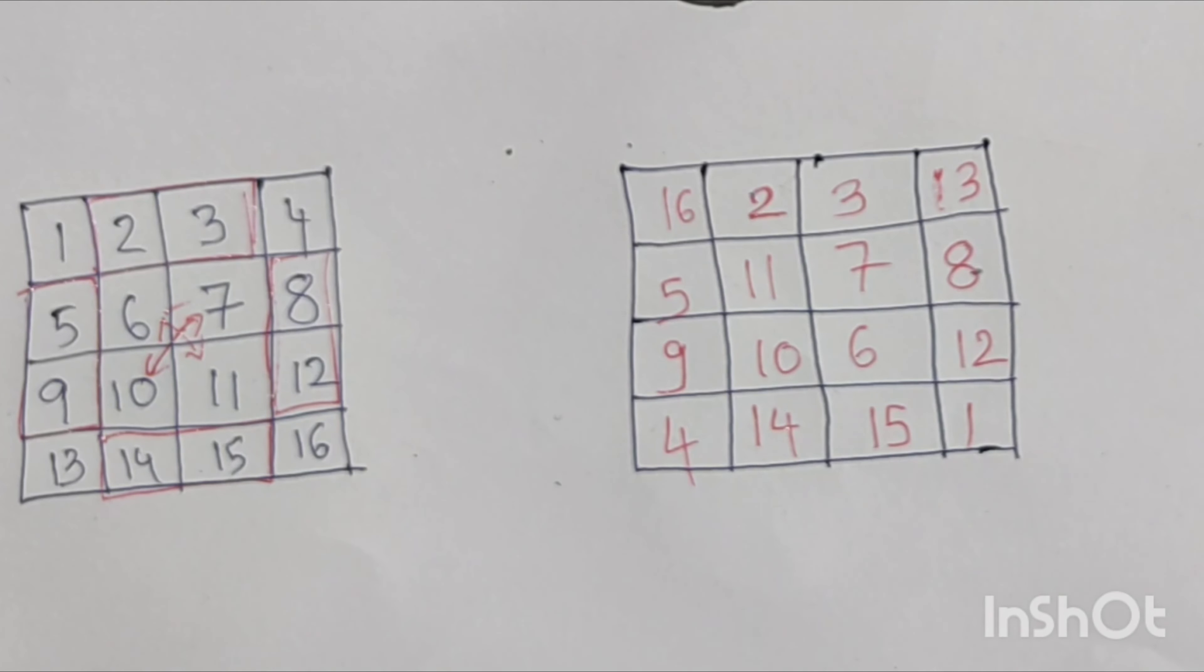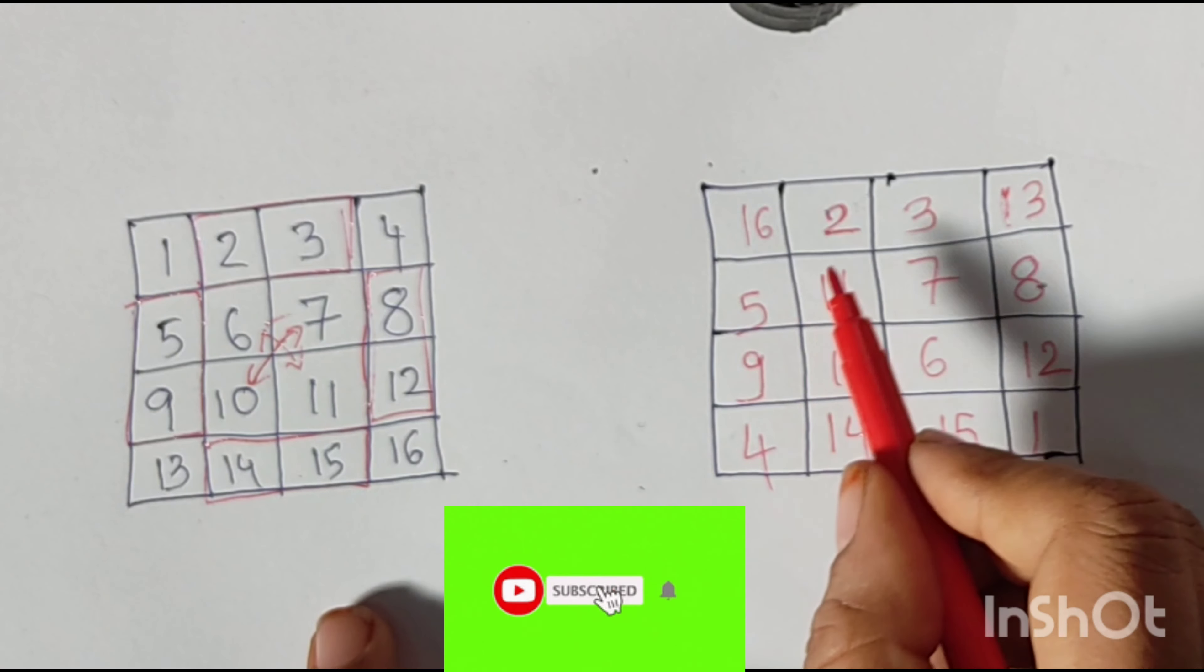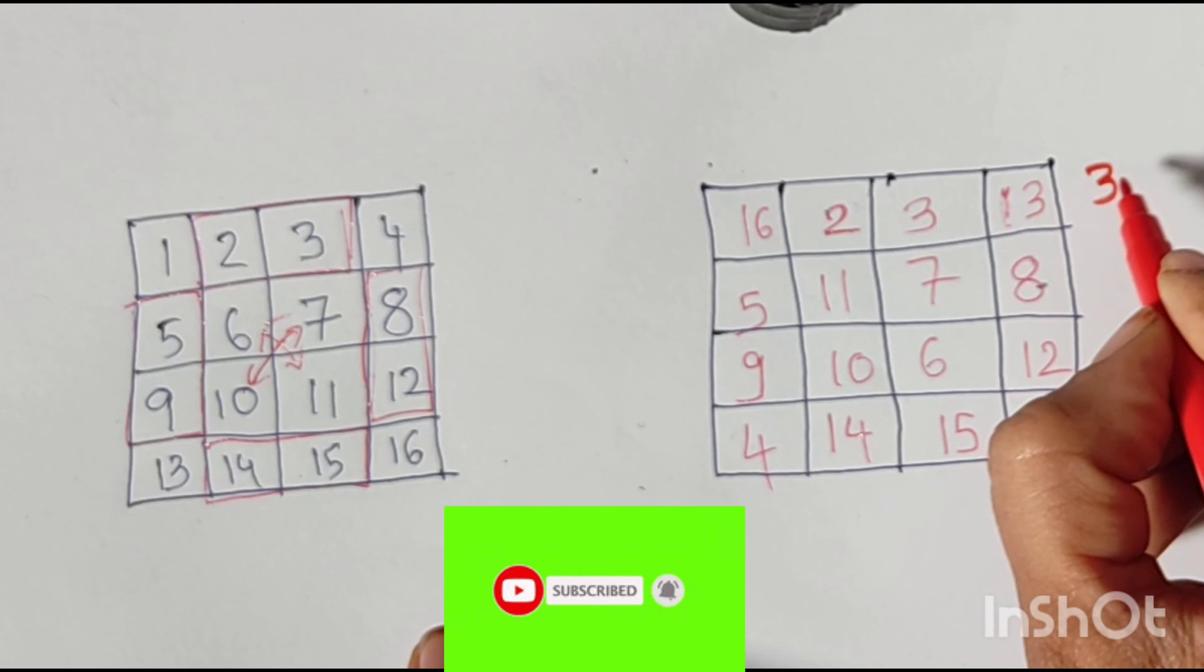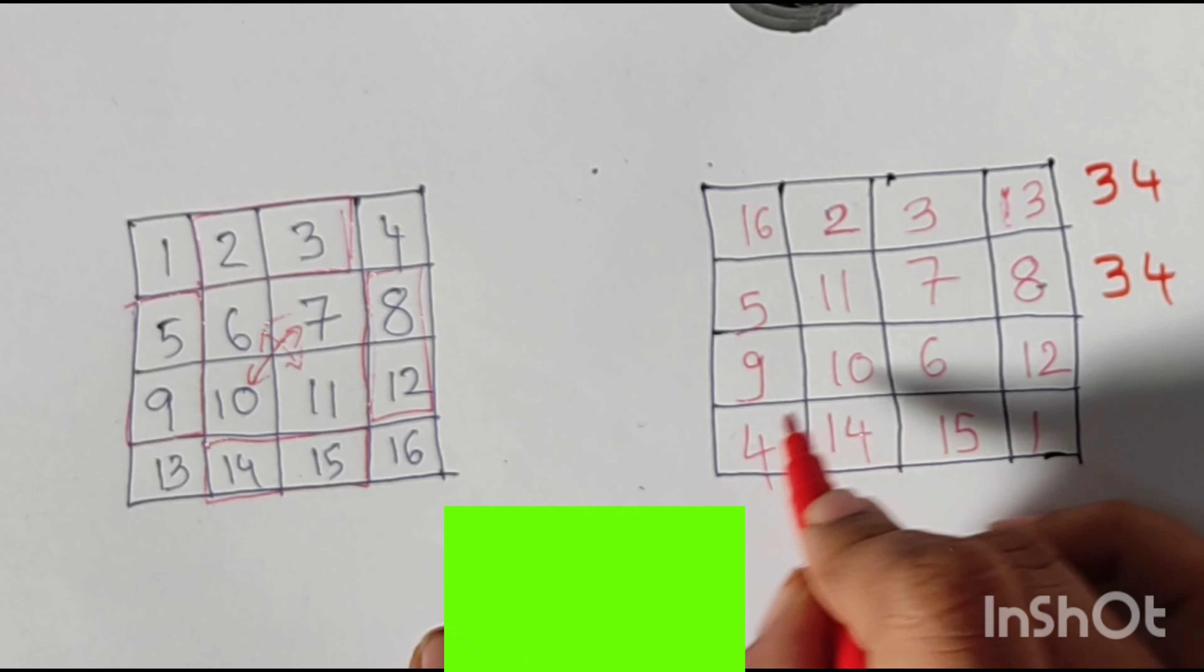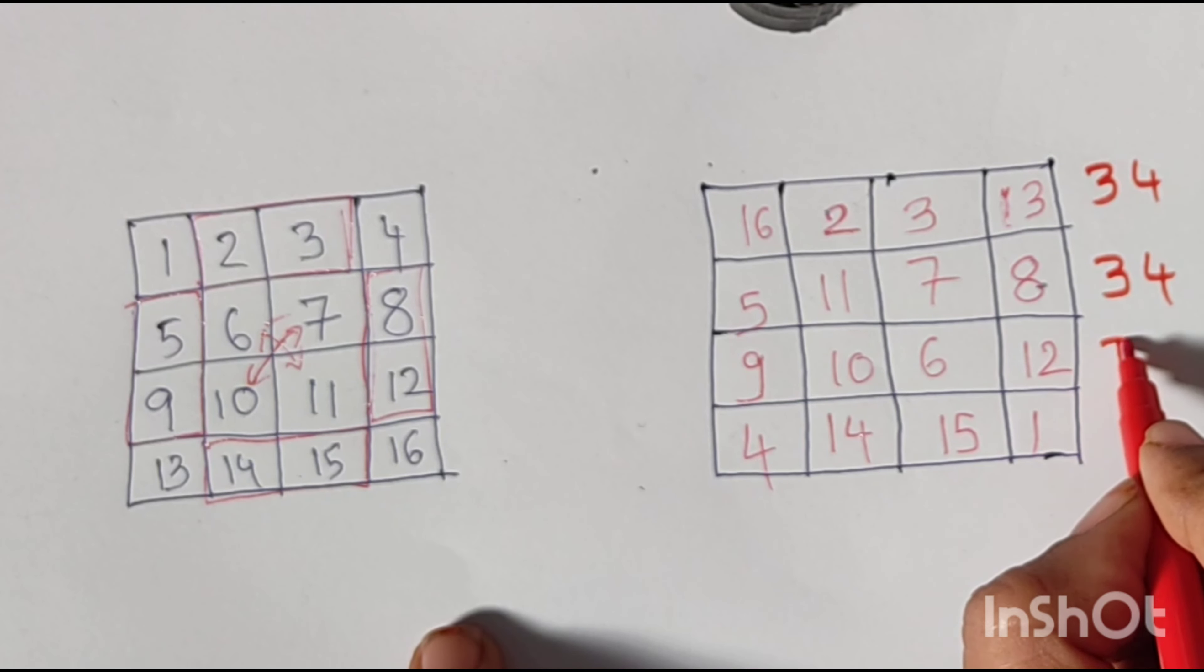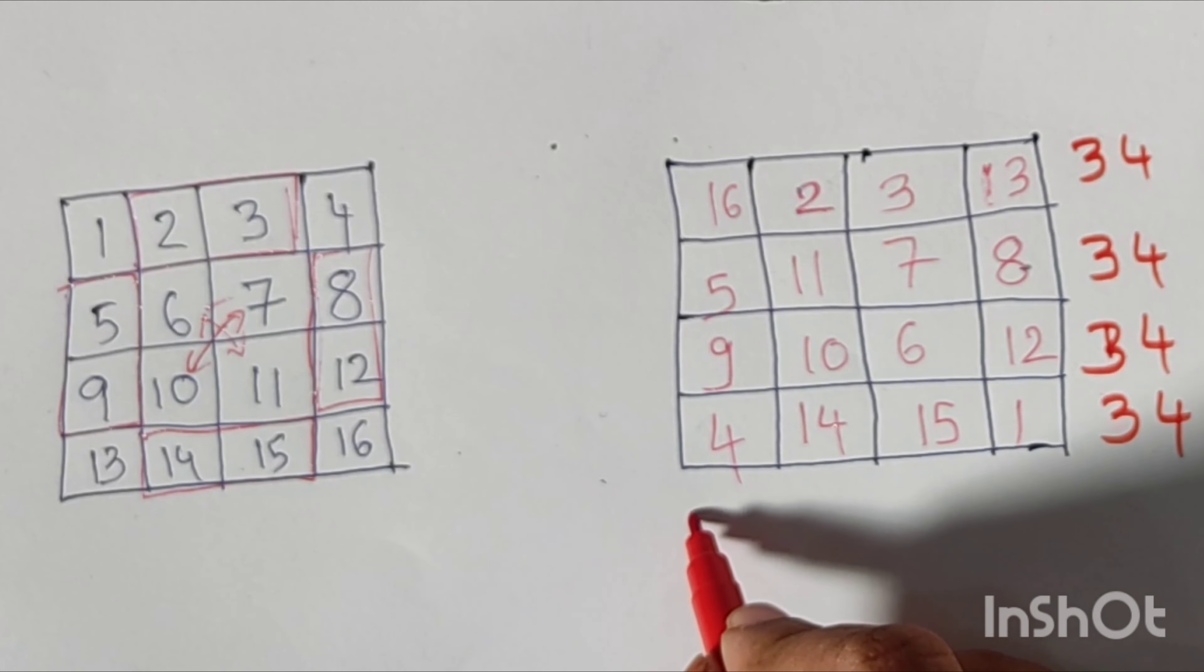Now the magic square is completed. Now we will check it out. First we'll calculate the rows. The first row sum will be 34 and second row sum also 34. Third row, fourth row sum will also be 34.